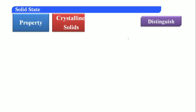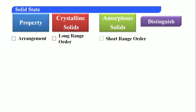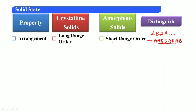Now we will see the distinguishing properties between crystalline solids and amorphous solids — important for two-mark questions. Arrangement: crystalline solids have long-range order, while amorphous solids have short-range order. Long-range order means atoms repeat in a regular pattern like A, B, A, B continuously. In amorphous solids, the arrangement is irregular — short-range order, with patterns like A, A, B, B, A, B without a fixed sequence.